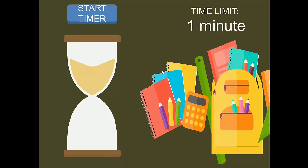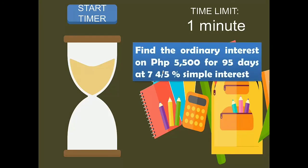Now try solving this problem on your own for one minute. Find the ordinary interest for 5,500 pesos for 95 days at 7 and 4/5 percent simple interest. Timer starts now.